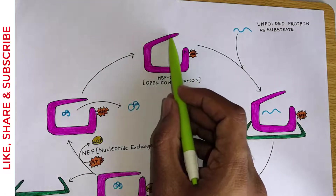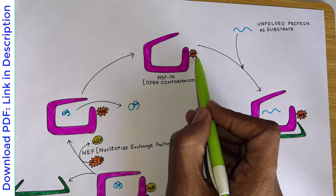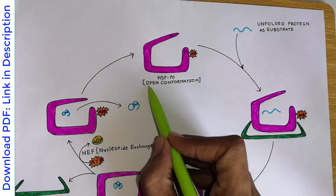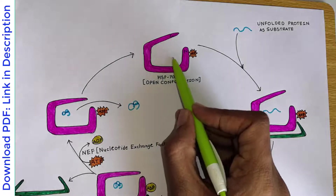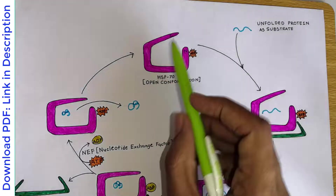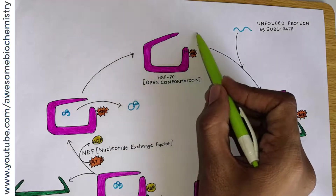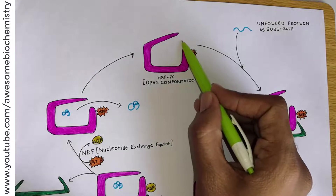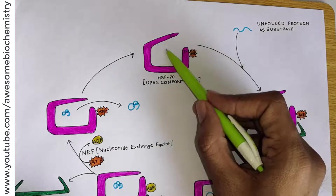In this case, you can see that this is the HSP70 protein. Its N-terminal domain is bound with ATP. Whenever the N-terminal domain is bound with ATP, this HSP70 remains in the open conformation. Open conformation means this central protein cavity is open, because this C-terminal domain, which acts as a lid, is opened. Whenever HSP70 is in the open conformation, its central protein cavity can communicate with the external environment. That's why we call it the open conformation. And through this opening in the lid, the unfolded protein, which is a substrate for HSP70, can enter into this central protein cavity.